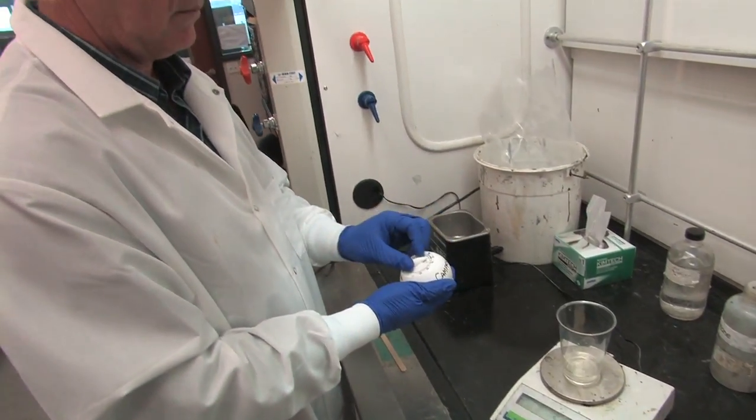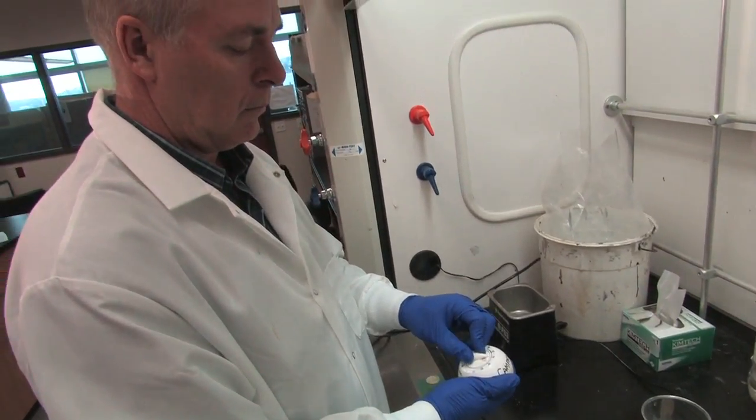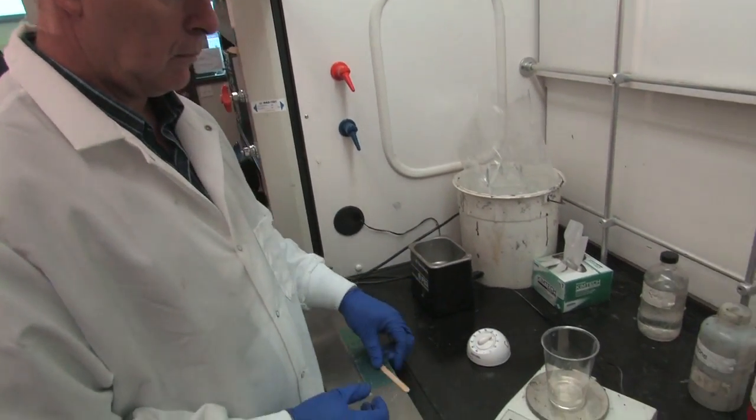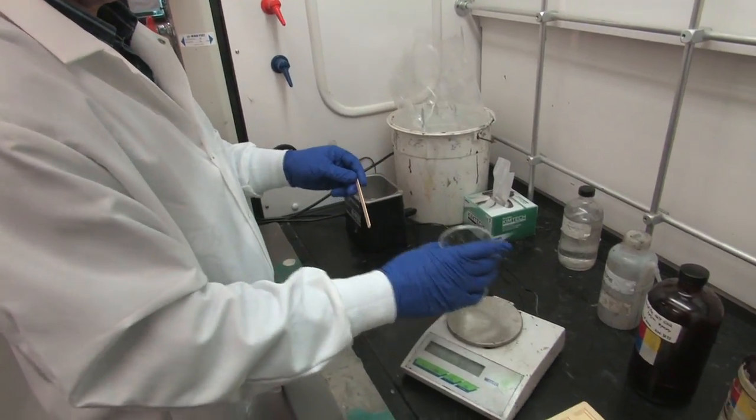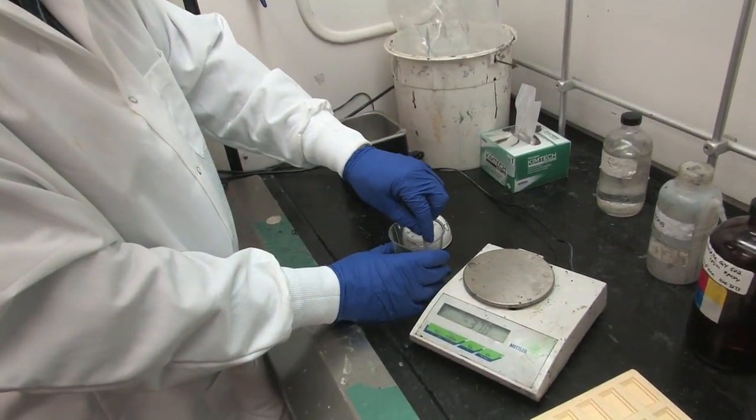Once the hardener and the epoxy are mixed, use the timer and stir the mixture at a steady pace with a wooden stick for about three to four minutes.